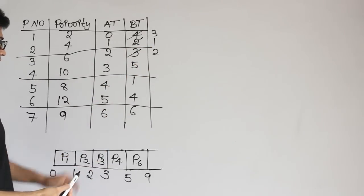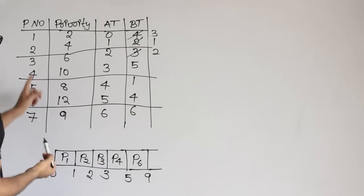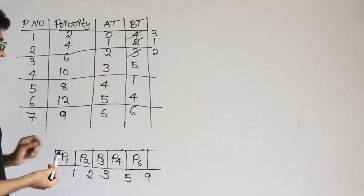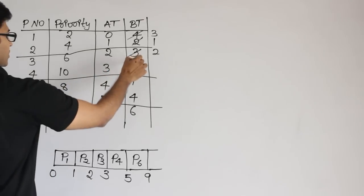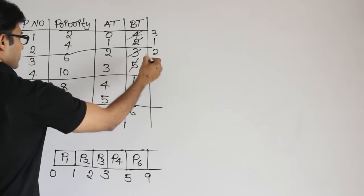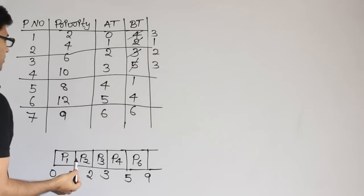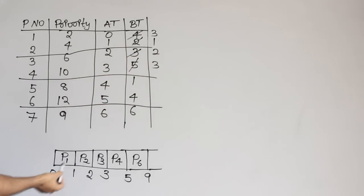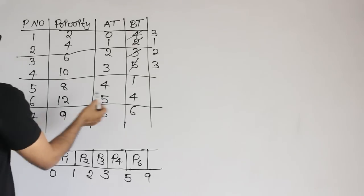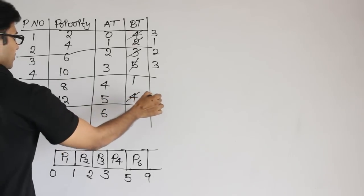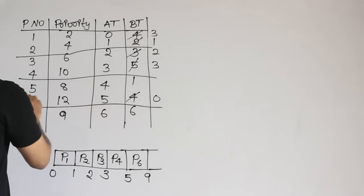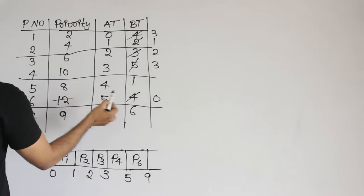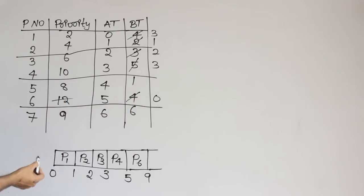P3's burst time is 3, it has run for 1 unit, so remaining burst time is 2. P4's burst time is 5 but it has run for 2 units, so remaining burst time is 3. P5 has not been scheduled yet. P6 has run to completion — P6 is over completely.